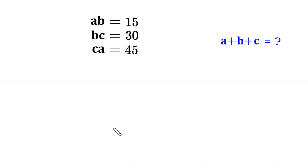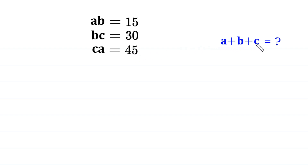Hello, welcome to Horusol this very nice system of equations. A times B is equal to 15, B times C is equal to 30, C times A is equal to 45. We need to find the value of A plus B plus C. So let us start.